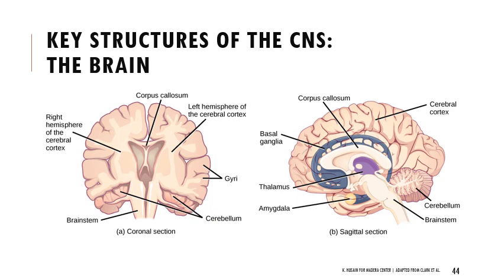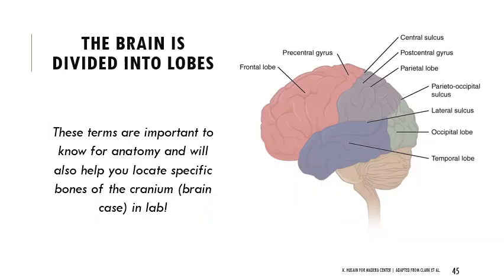The CNS consists of the brain and spinal cord. Without going deep into brain anatomy, there are different regions - the brain stem is the bottom central part, the corpus callosum connects the right and left hemispheres, and the cerebral cortex is the layer covering the entire brain surface. The brain is divided into lobes - knowing these terms will be important for anatomy. The frontal lobe is at the front by your forehead.